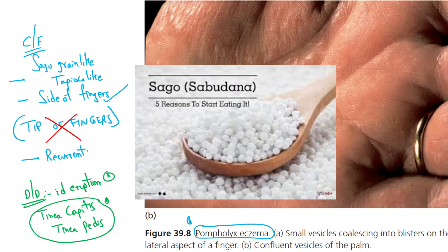These are the sago grains, also called sabudana in Hindi, because these deep-seated vesicles have a similar appearance. They are called sago grain or tapioca-like lesions.